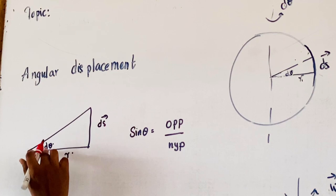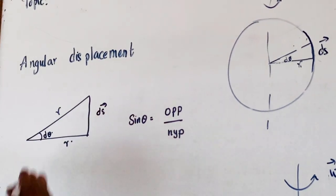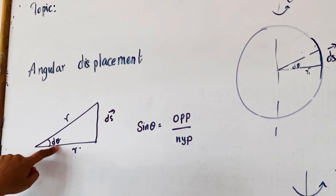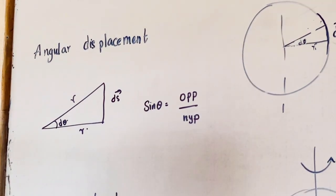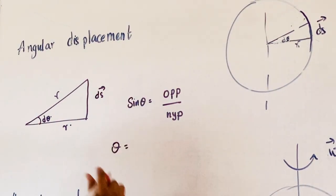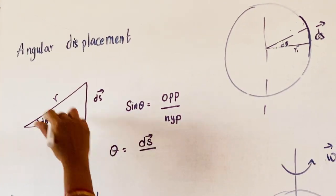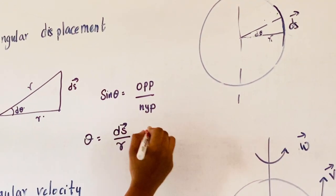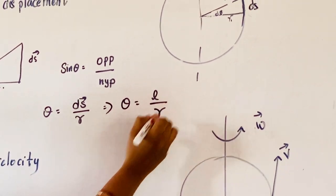Here theta is very small — it is d-theta. Since the angle is very small, both the hypotenuse and the adjacent side are approximately equal to the radius vector. We know that when theta is very small, sin theta approaches theta. So theta equals ds-bar (the small linear displacement) divided by the radius vector. From this we conclude that theta is equal to linear displacement l divided by radius vector r.